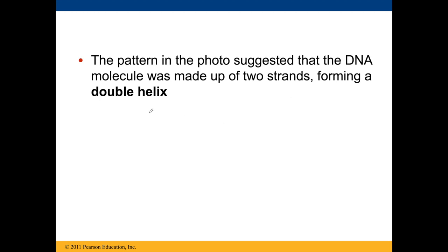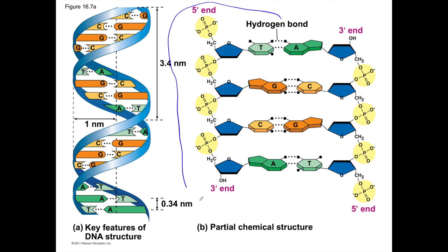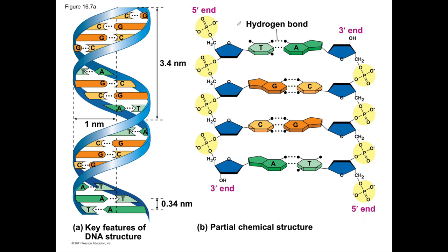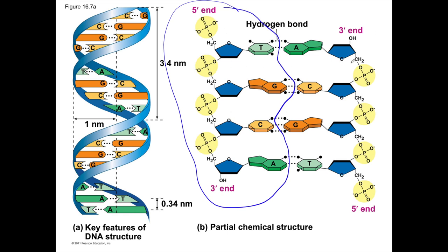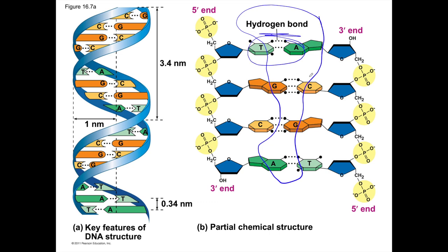Nowadays we know DNA is a double helix — made up of two pieces of DNA attached to each other. One strand is here, another strand is here. Those two strands are held together in the middle by complementary base pairing: A pairs with T, C pairs with G. What makes up each strand is covalent bonds. What holds the two strands together in the middle is hydrogen bonds due to complementary base pairing.